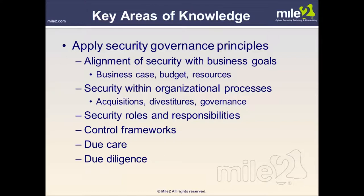Security does not happen by magic; it must be somebody's job. We must have clearly defined security roles and responsibilities. Those roles vary according to a person's level of responsibility within the organization, but everyone must realize that security is actually a part of their job requirement. We'll look in later domains at system ownership and information ownership and those with a specific and higher level of responsibility for the protection of information assets. A wealth of control frameworks and proven standards are available, and the CISSP should consider the use of these control frameworks when putting together a security program — to develop a security strategy and, from that, a security plan.